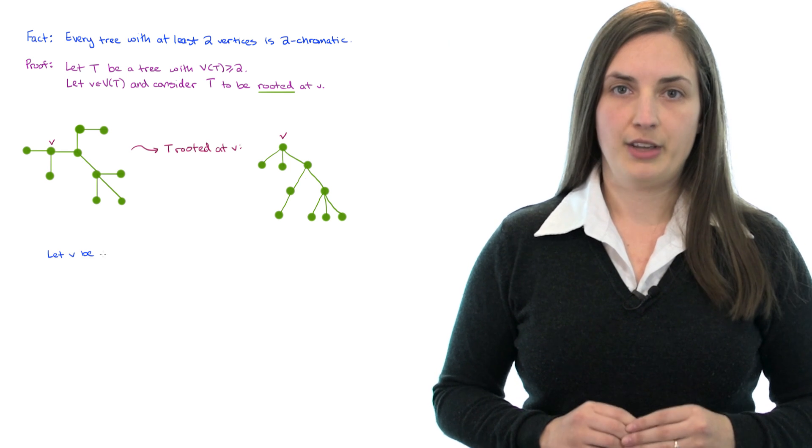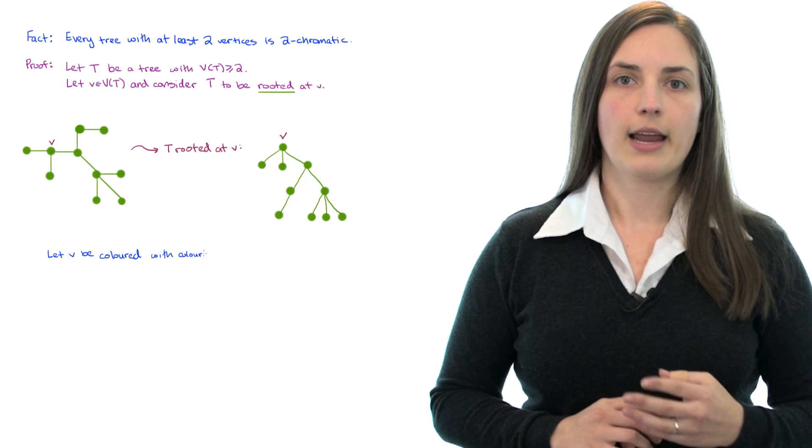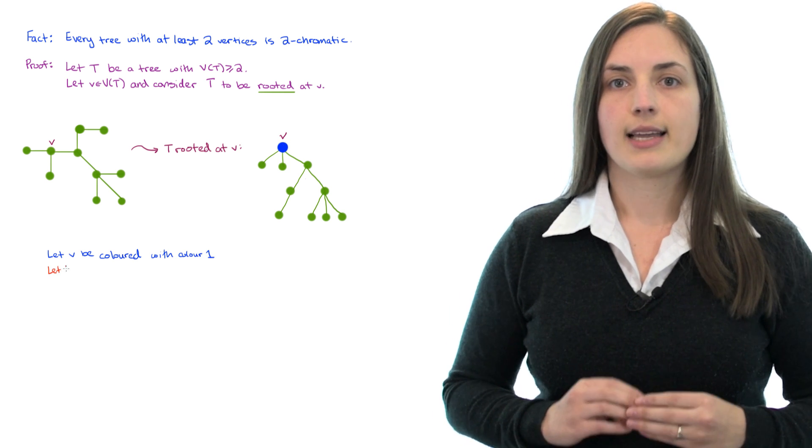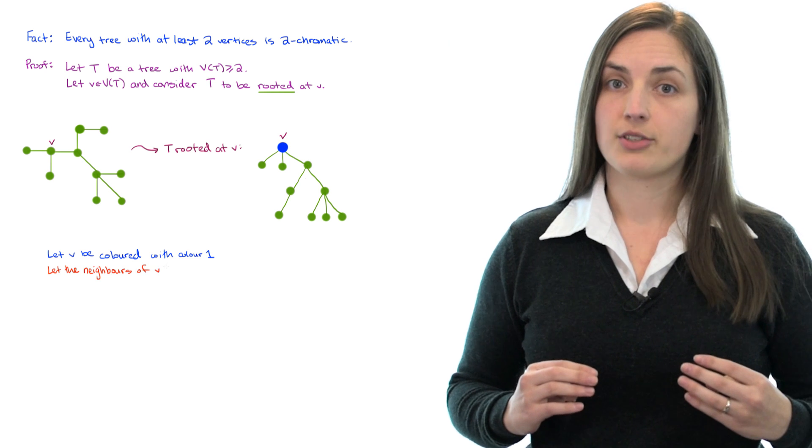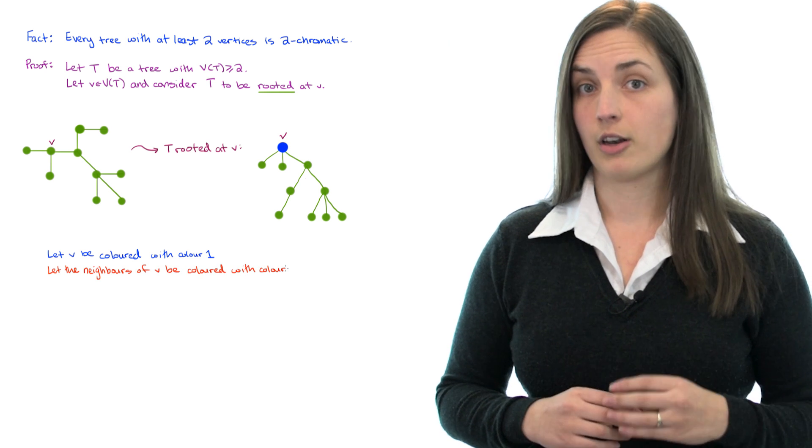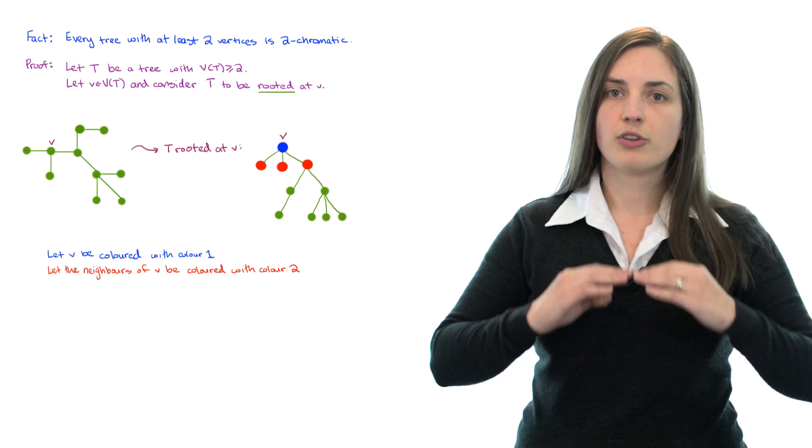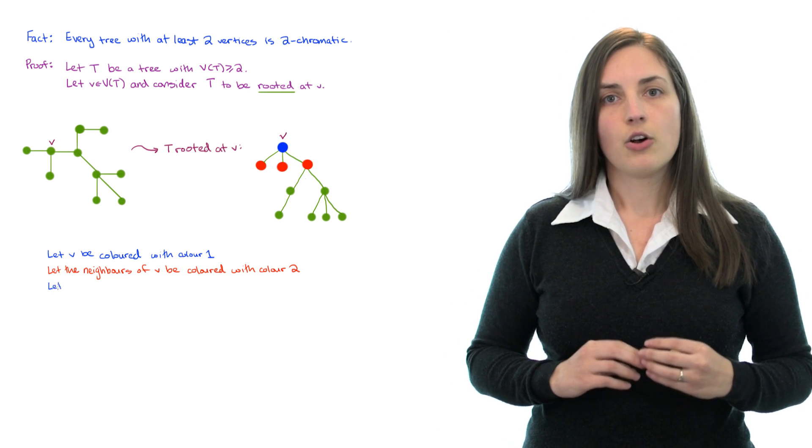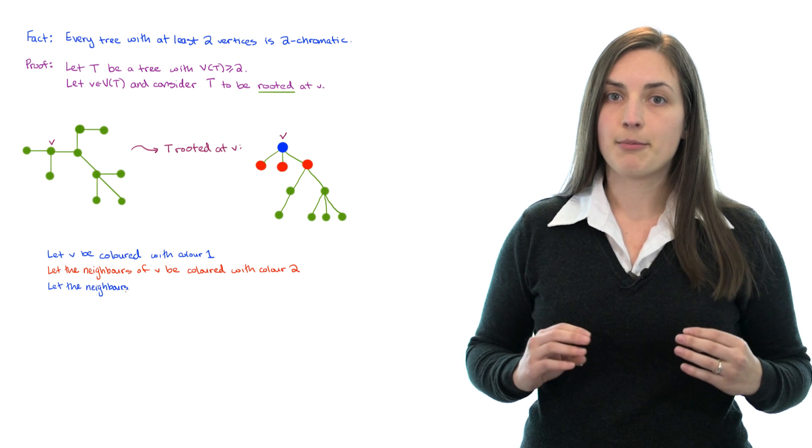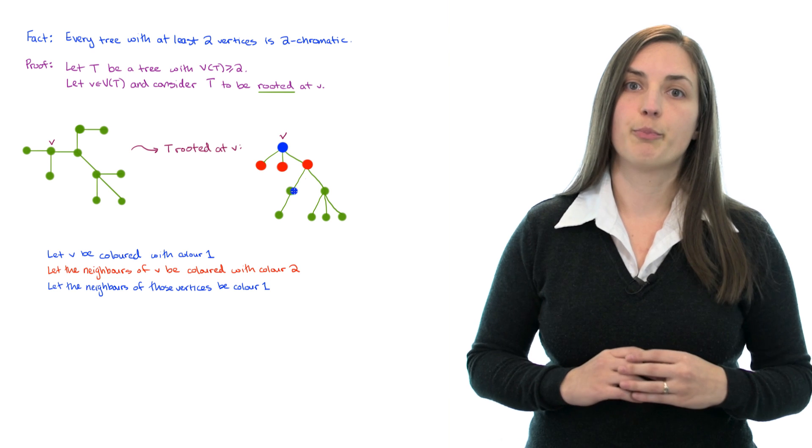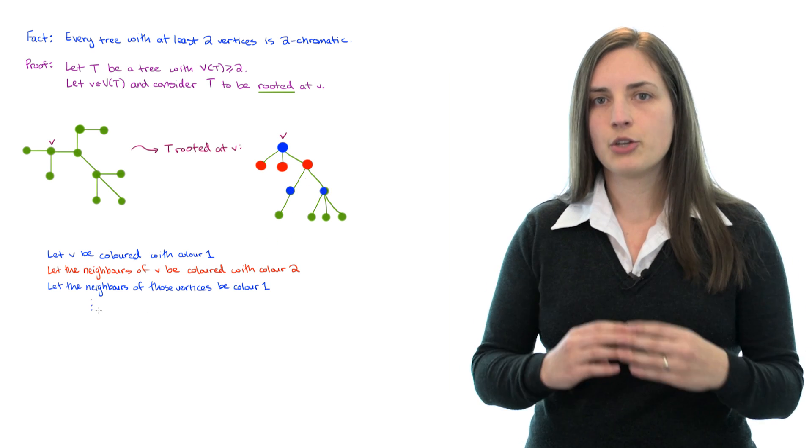Let's let V be colored with color 1, and I'll use blue to represent this. Next, let's take a look at all of the neighbors of V and color them with color 2, and I'll use red to represent this. We can just move lower down the tree and take a look at all of the neighbors of the vertices which were colored red and make sure they get colored blue. We can continue this process.